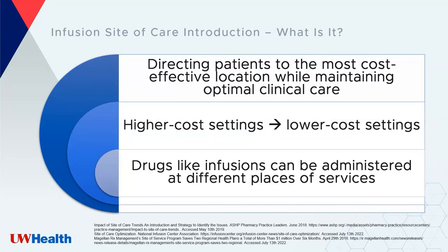At a high level, site of care optimization means directing patients to the most cost-effective location while maintaining optimal clinical care. Sometimes it's not warranted for patients to be infused in an ambulatory setting given high acuity or disease state, but when clinically appropriate, directing patients to a lower cost site of care is the goal. Drugs and infusions can be administered at different places of service — 'place of service' is a key term that will come up often throughout the presentation.